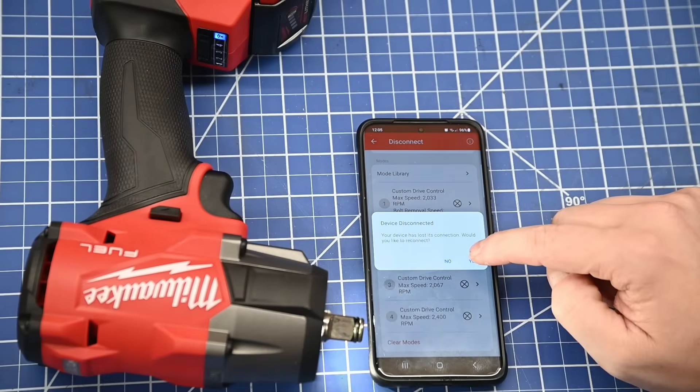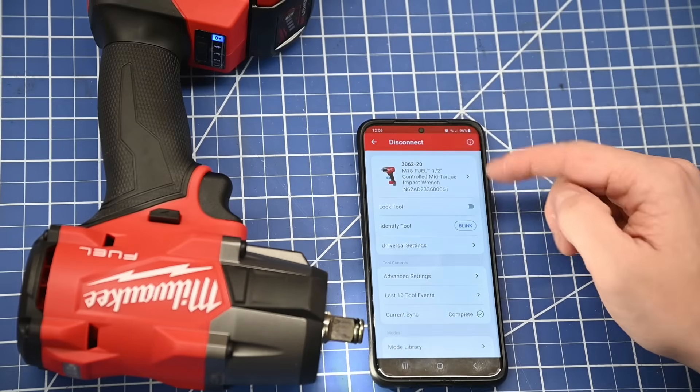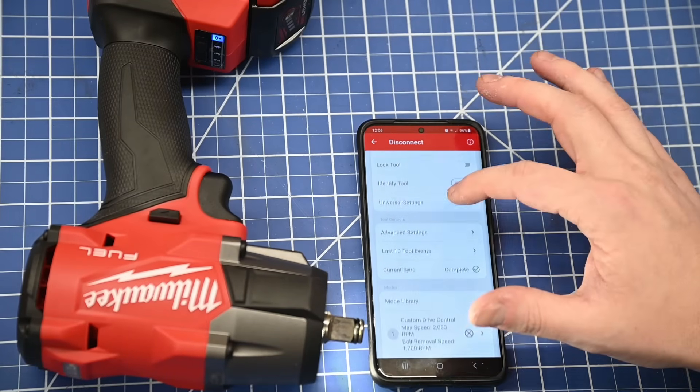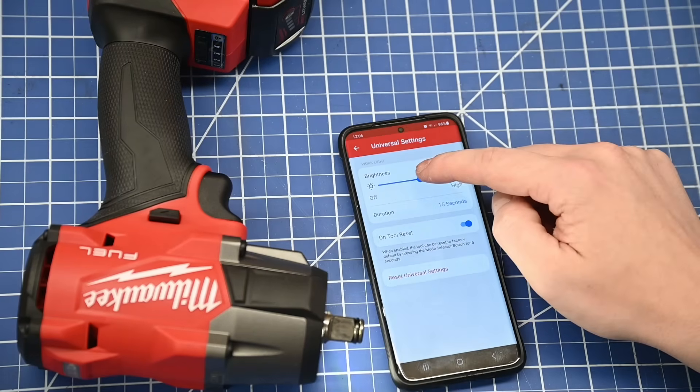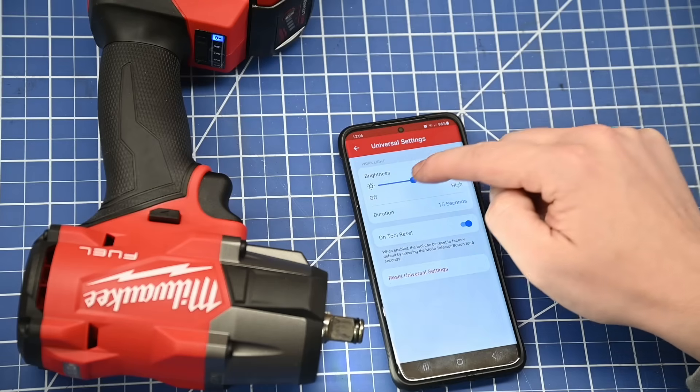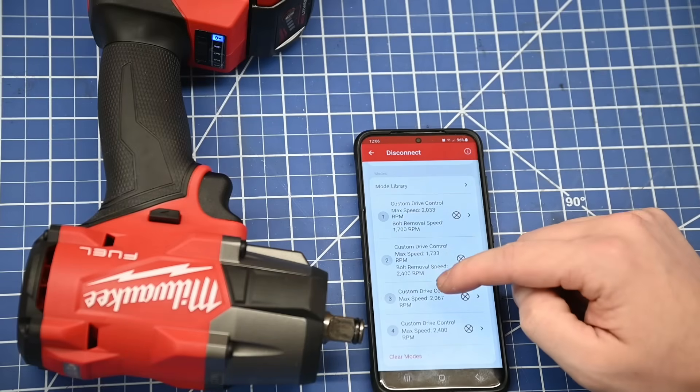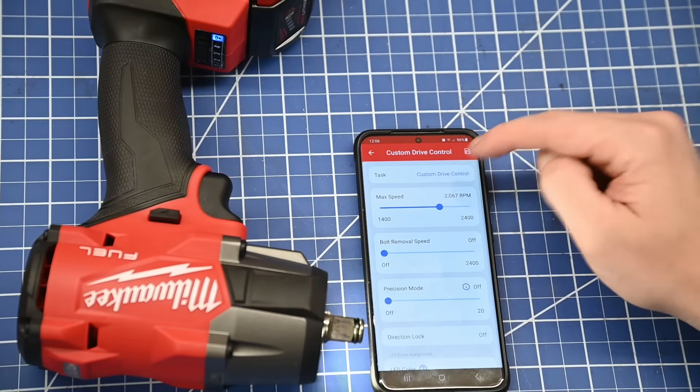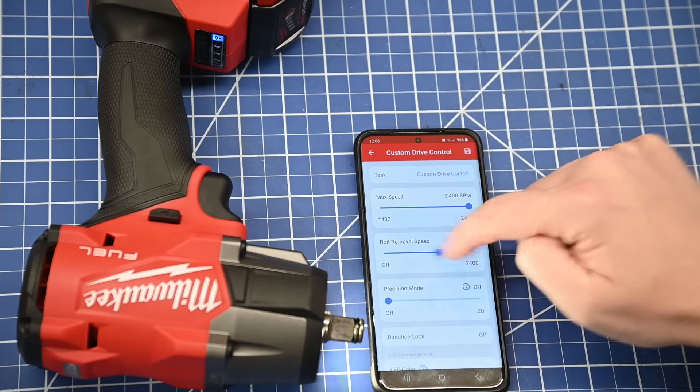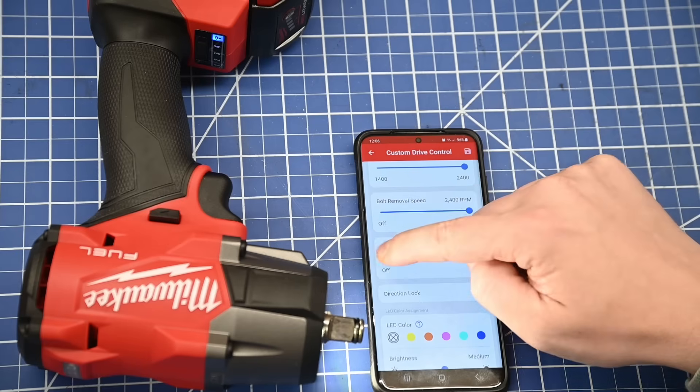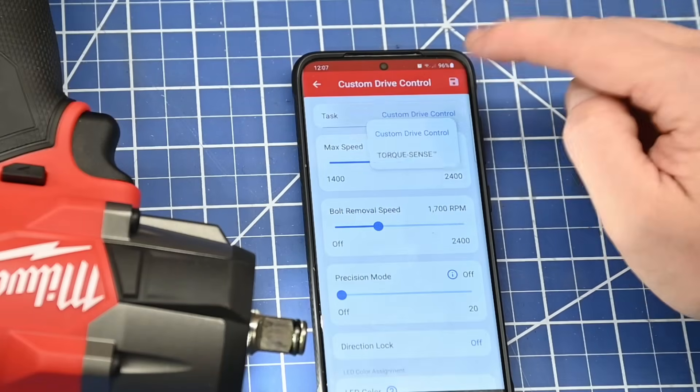So this thing's sort of wild. It's more digital IP than an actual hardware tool situation. You can do a lot of the features that One Key can on most tools, but there's some added crazy stuff in here too. You can make it blink to find it, change the brightness of these front LEDs and for how long they stay on after a trigger pull. These are the preset and custom modes. Usually three is the top setting power on a tool, but out of the box it's only set to 2067 RPM. We'll change that to 2400 and bolt removal speed is in the off, so we're going to max that out as well.